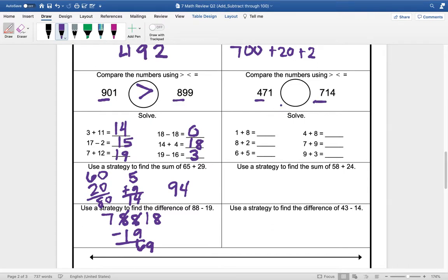We are comparing our numbers using greater than, less than, or equal to. Remember, we look at our hundreds first. We have 400 and we have 700. 400 is going to be less than 700, so 471 is less than 714.